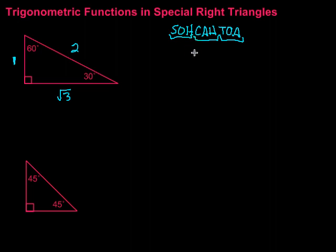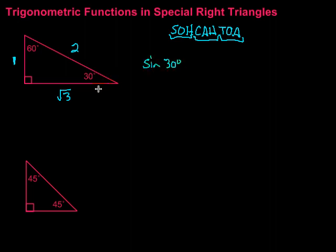We can also look at the reciprocal functions — secant, cosecant, and cotangent — after we cover sine, cosine, and tangent. Let's start with the 30-degree angle. The sine of 30 degrees is the opposite over the hypotenuse, which is 1 over 2. So the sine of 30 degrees equals one-half.